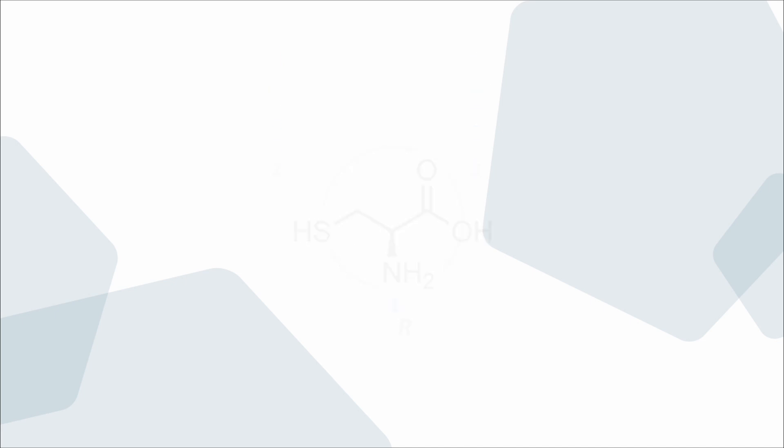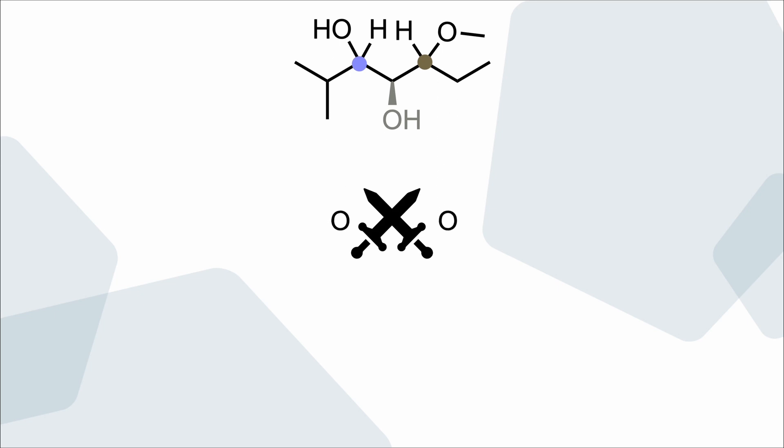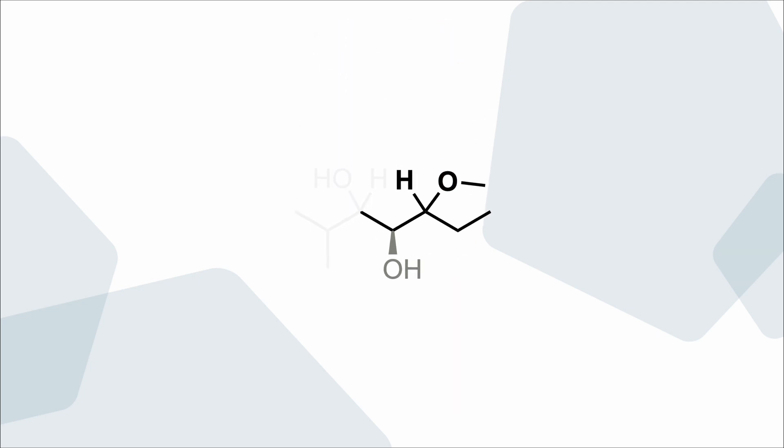For more complicated examples, there will be a lot of draws. In this example, all three atoms of each side tie with the other side. In the next round, we follow each side along the branch with the highest priority and continue our battles. In this case, the battle ends here, leading to an S configuration.